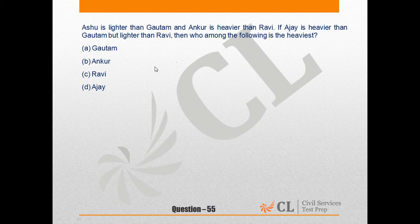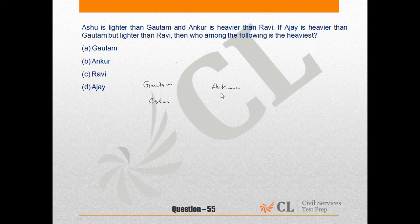If we represent this data in vertical form: Anshu is lighter than Gautam. Ankur is heavier than Ravi. In the first and second statements, nothing is common, so Ankur will be written above and then Ravi will be written below it.